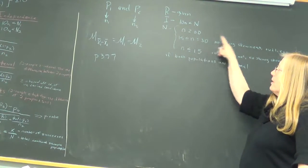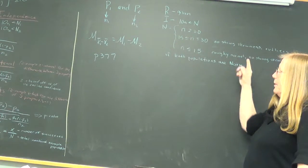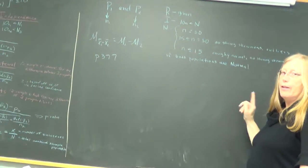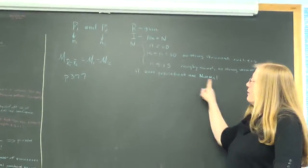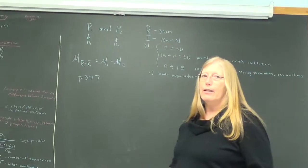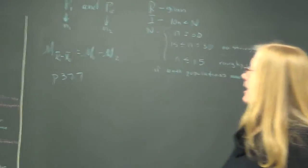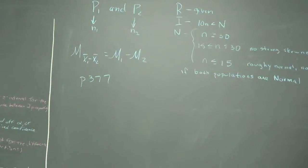Notice all the requirements for being normal. There's difference for over 30, between 15 and 30 and less than 15. And also, if both populations are normal, that's another way that we can state that our sample difference is normal.